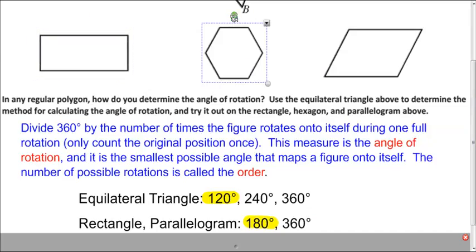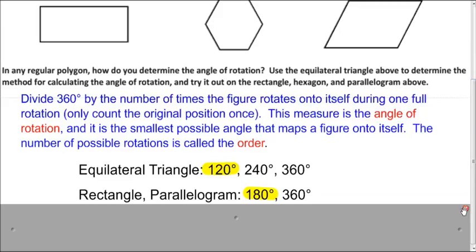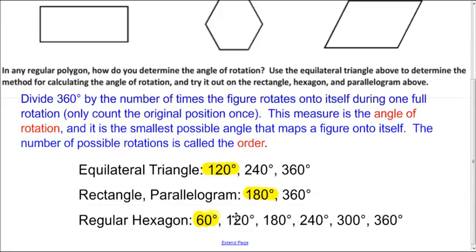And for the regular hexagon, let's see, we have 1, 2, 3, 4, 5, and 6. So 360 divided by 6 is 60. So that's the angle of rotation. And here are the other five measurements that will map that regular hexagon back onto itself.